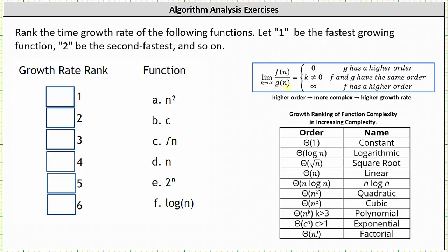However, it's much faster to refer to the table below, which is the growth ranking of function complexity in increasing complexity. Just keep in mind the table is in increasing complexity and we're asked to list the functions from fastest growing to slowest growing, which means we need to read the table from the bottom to the top.